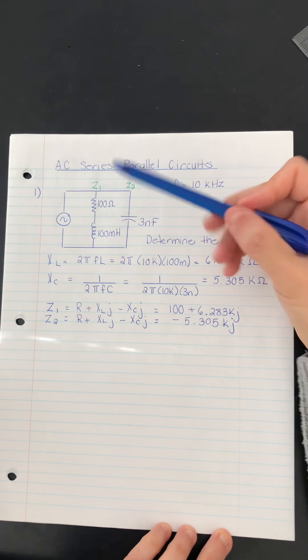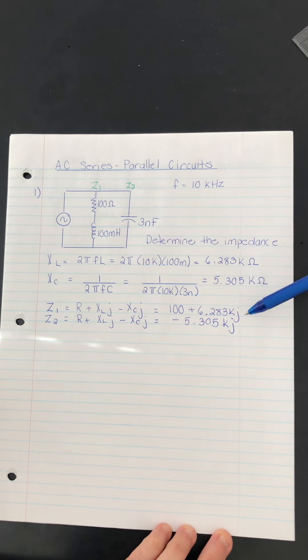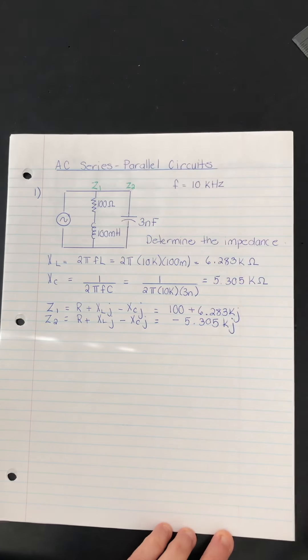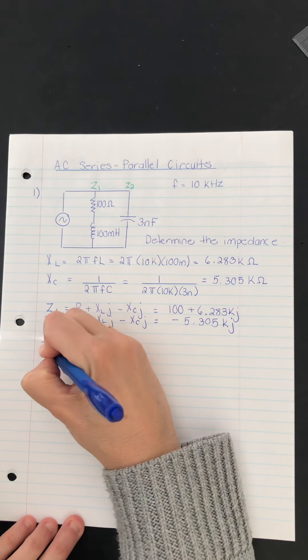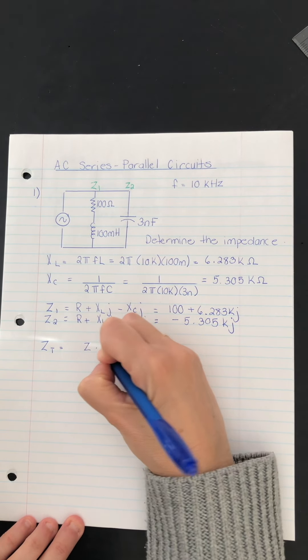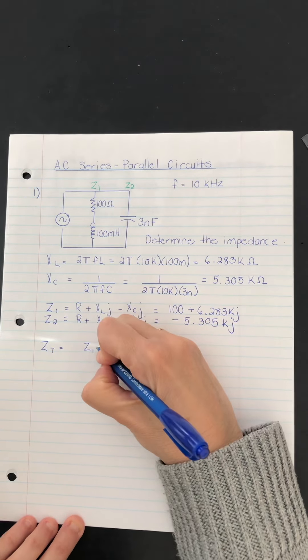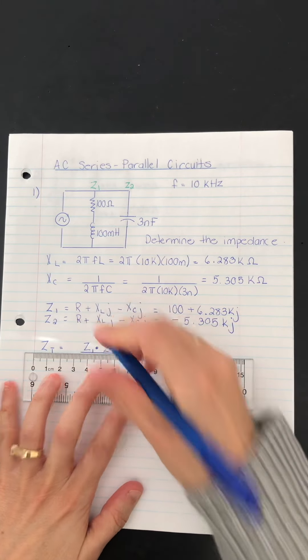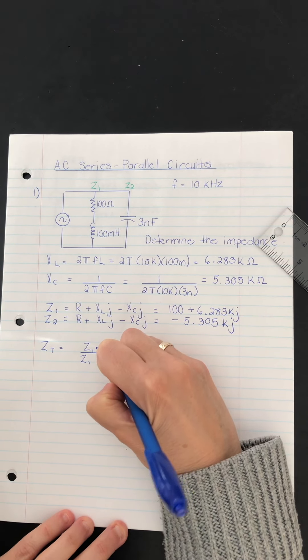So now we know the impedance here and the impedance here. We have those numbers in rectangular form. And we want to combine them now in parallel because the branches are connected in parallel. I like to use the product over sum formula. So in the top, I'll want to multiply Z1 by Z2. And in the bottom, I will want to add Z1 and Z2 together.